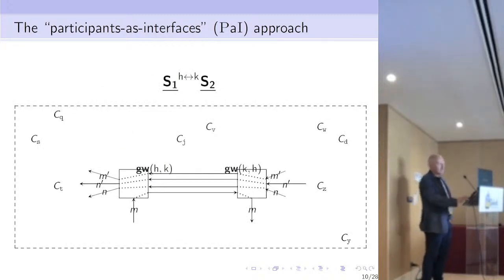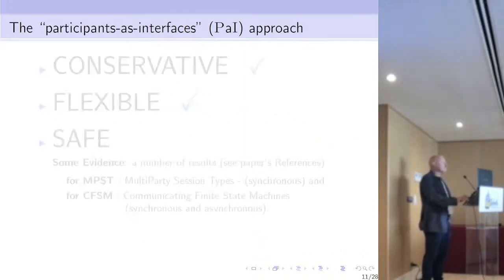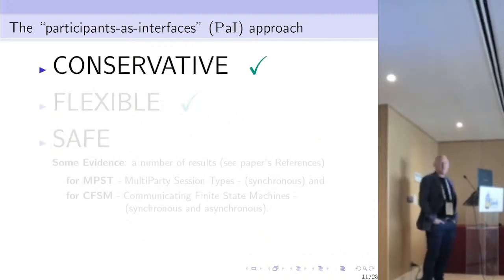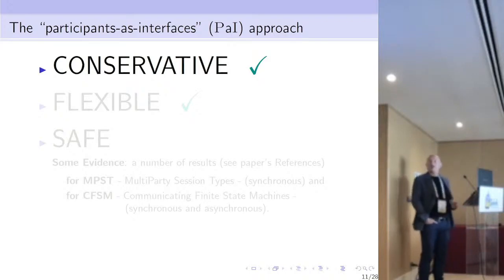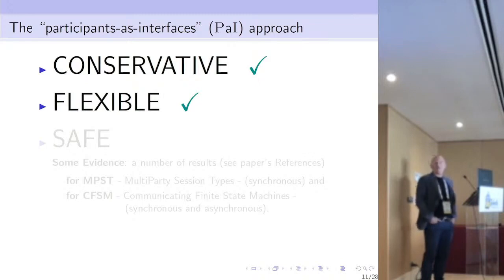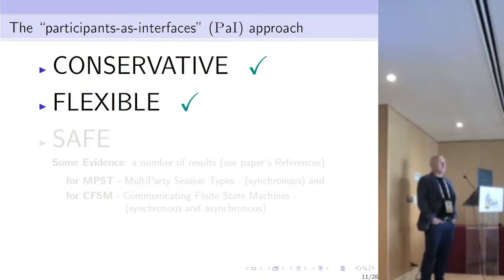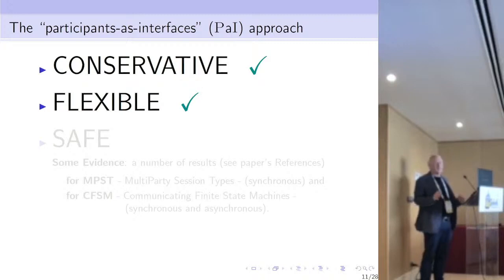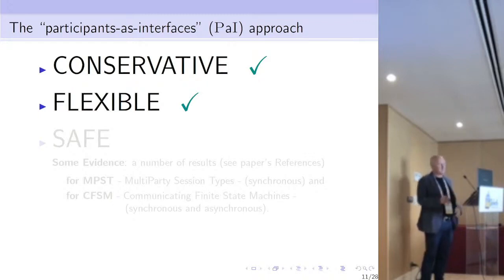This description is very abstract, and from that we can see that this method is definitely conservative, because we do not change the systems but just replace the two interface components with forwarders. It is definitely flexible because it does not depend on the particular implementations of the systems, and the two systems could have been closed ones — not developed from scratch for composition.